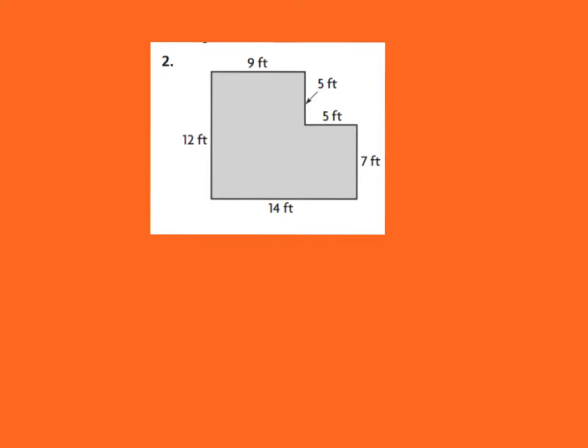I've seen students prefer to make their rectangle vertically instead of horizontally. I'm going to show you that we get the exact same answer. Here we have rectangle A and rectangle B. Rectangle A has a base of 9 feet times 12 feet. 12 times 9 equals 108 squared feet.